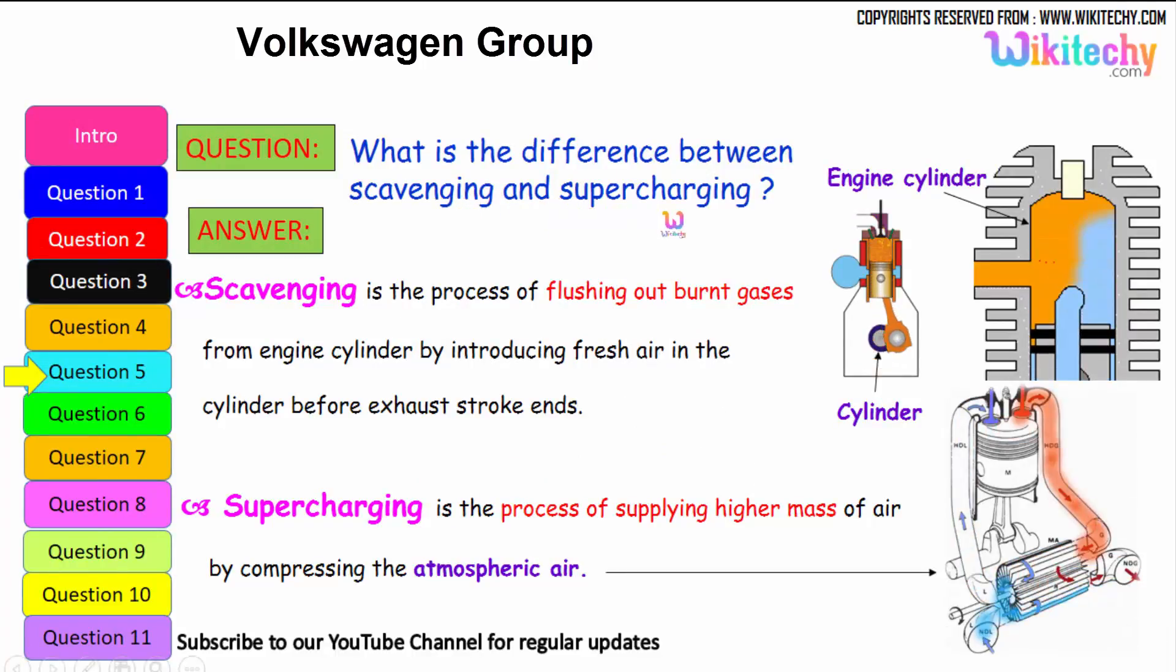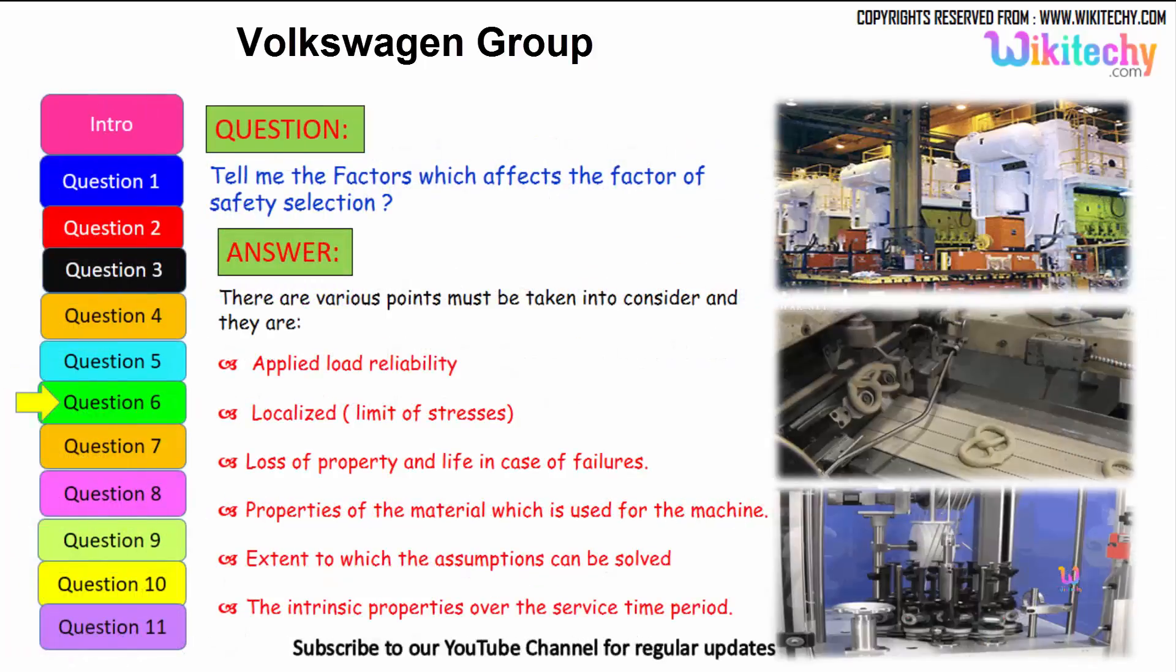Let us move on to a different question. What is the difference between scavenging and supercharging? Scavenging is the process of flushing out the burnt gases from the engine cylinder by introducing the fresh air in the cylinder before the exhaust stroke ends. But supercharging is the process of supplying high-end masses of air by compressing the atmospheric pressure. That is referred to as supercharging. We are able to see high pressure of air is injected into the cylinder to compress the atmospheric air.